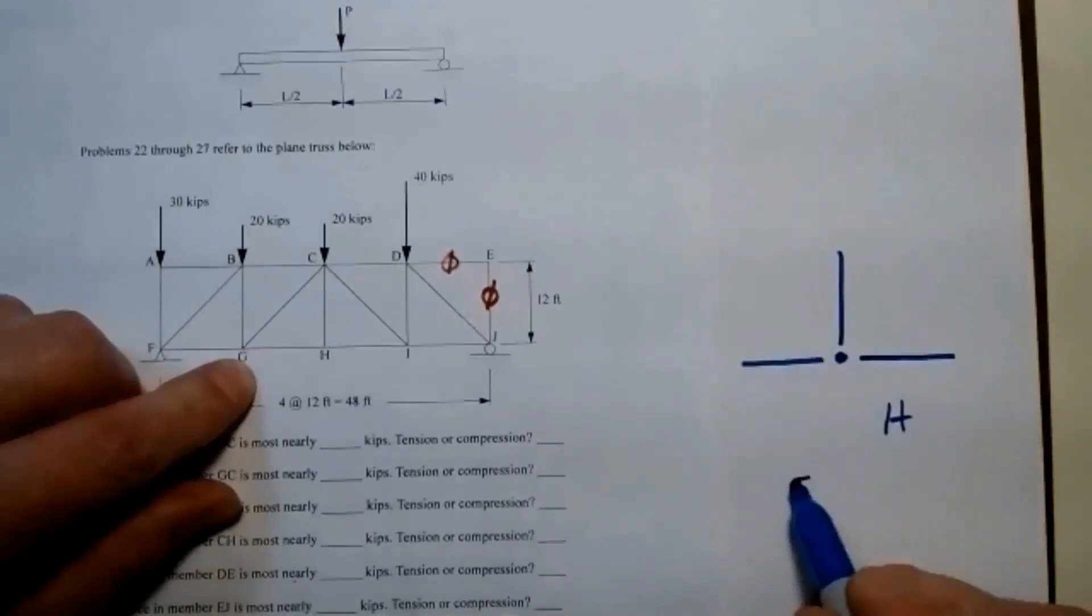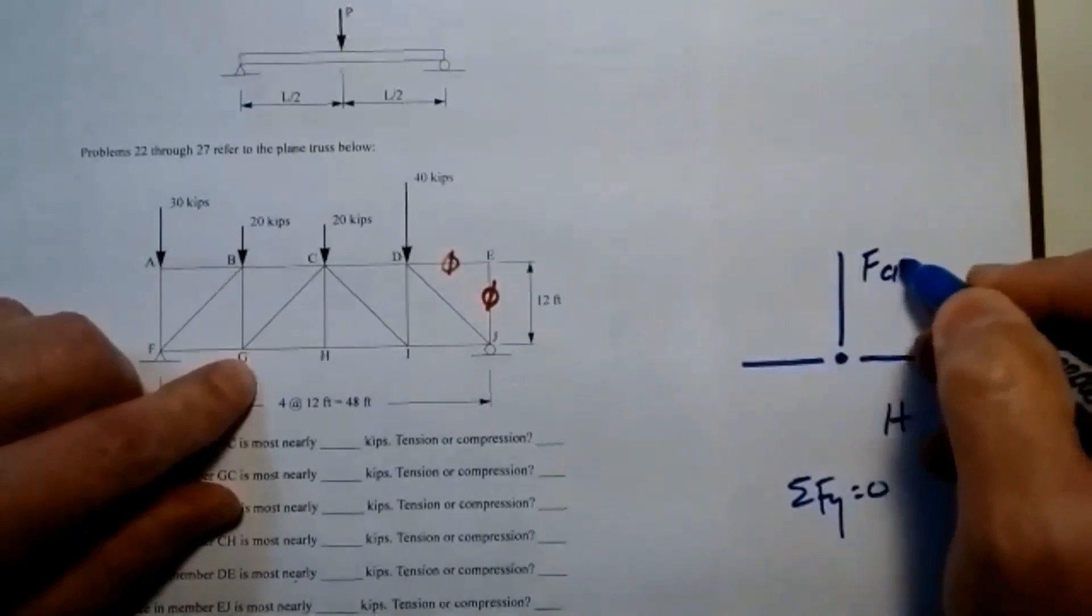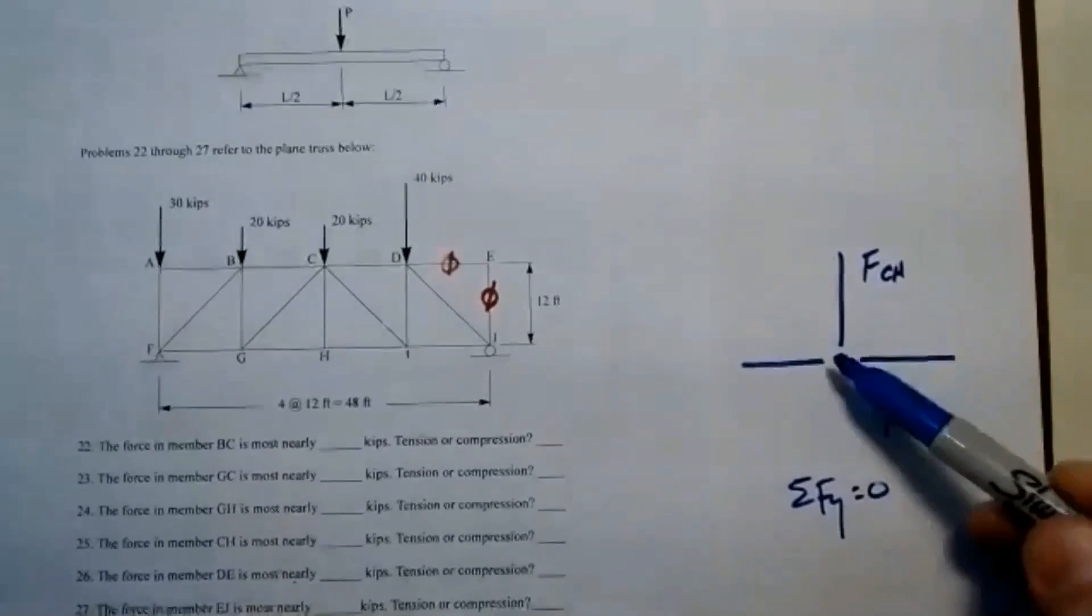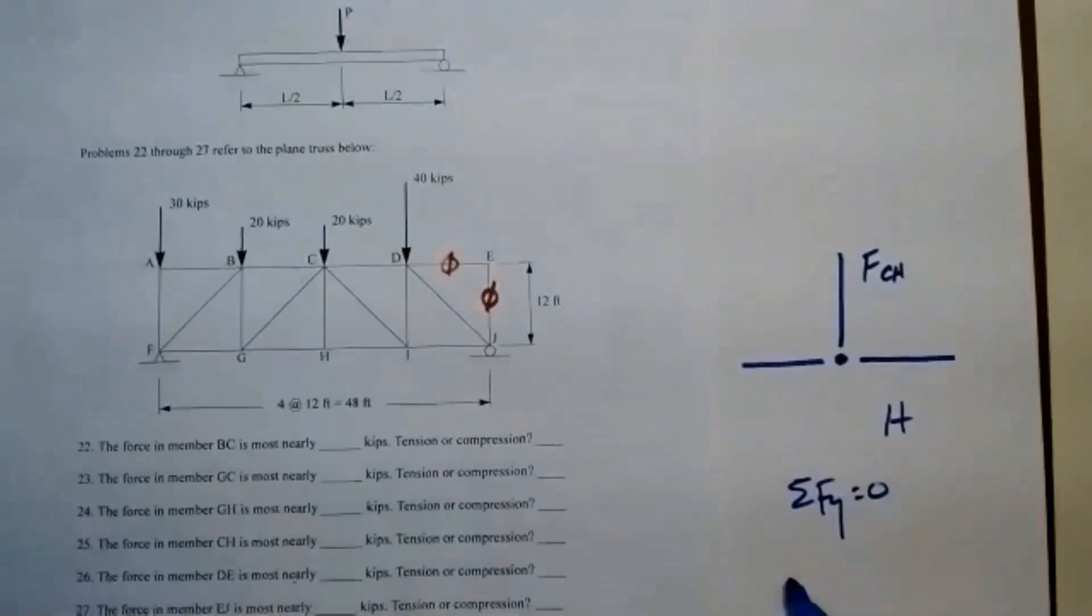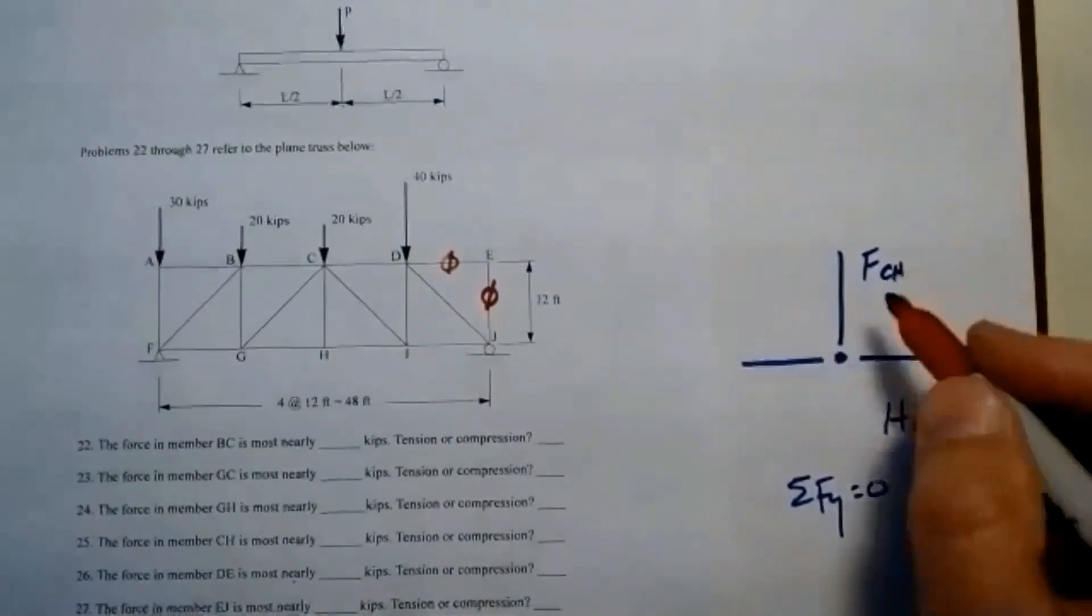And so here if I sum forces in the Y, I know they have to equal zero. I've got force CH, but I have no applied loads. So that means that force CH is zero.